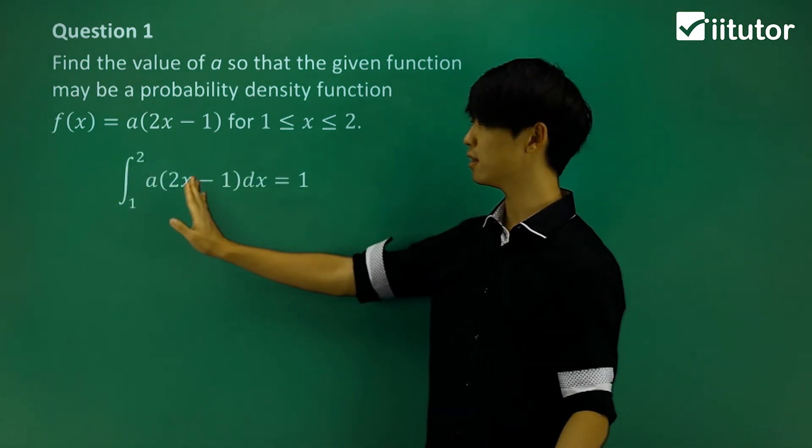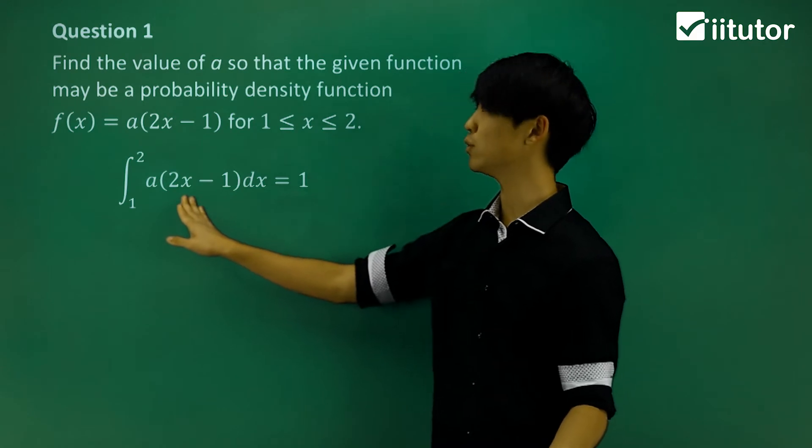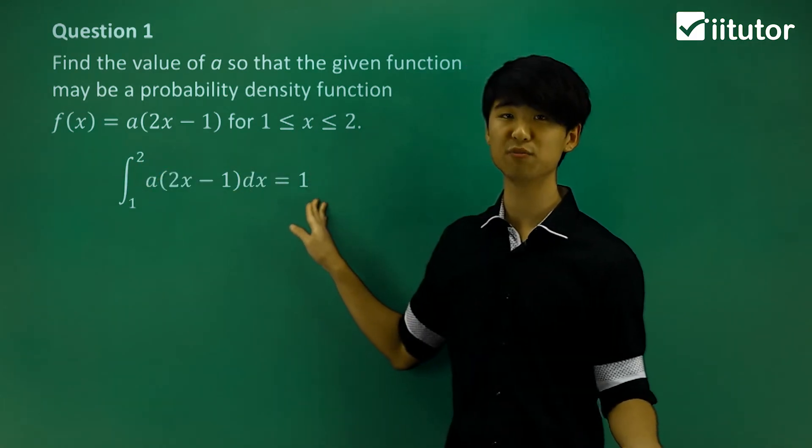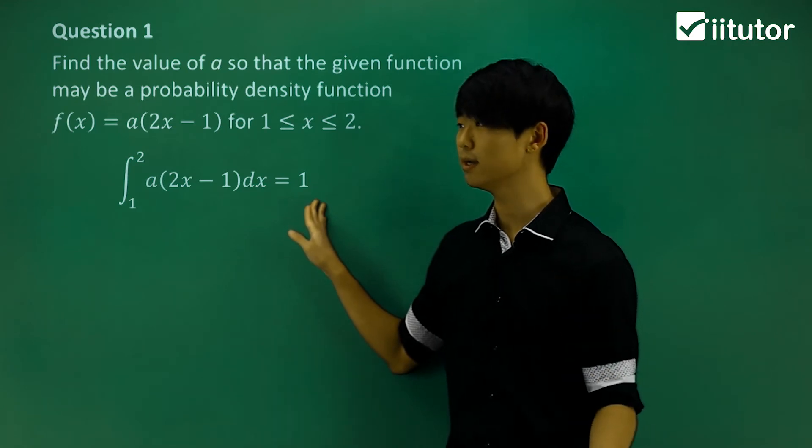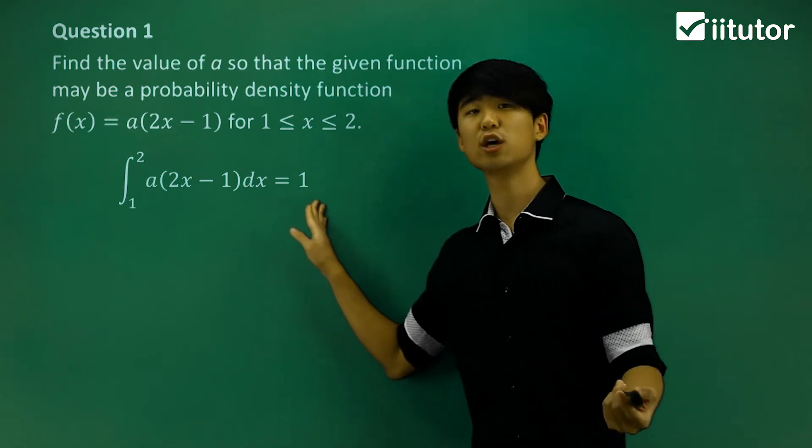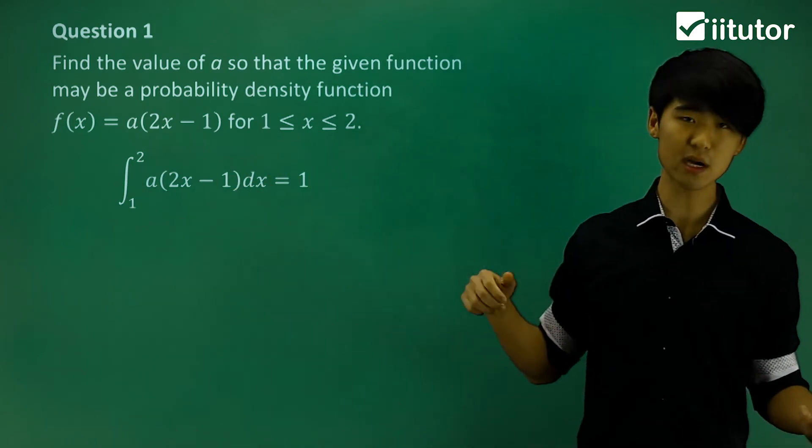So the area under this function between my given 1 and 2, that should give me 1. So if this is 1, then this will be a PDF, or probability density function. So let's try and kind of clean this up and see what happens.